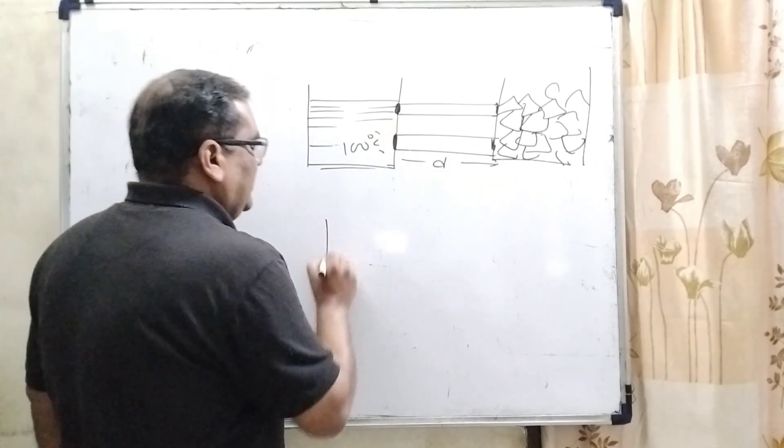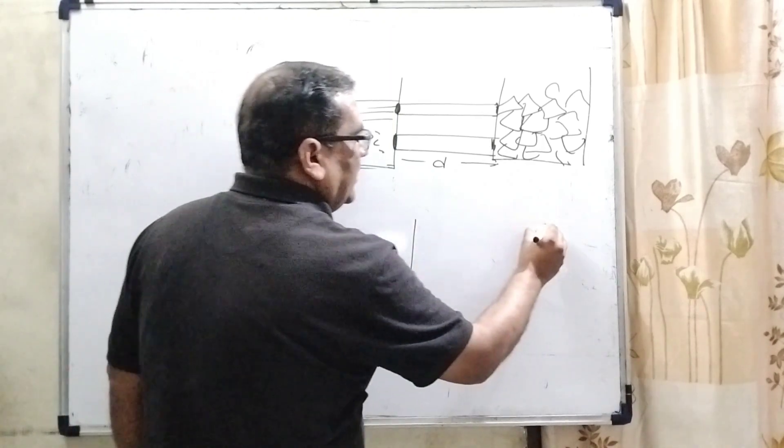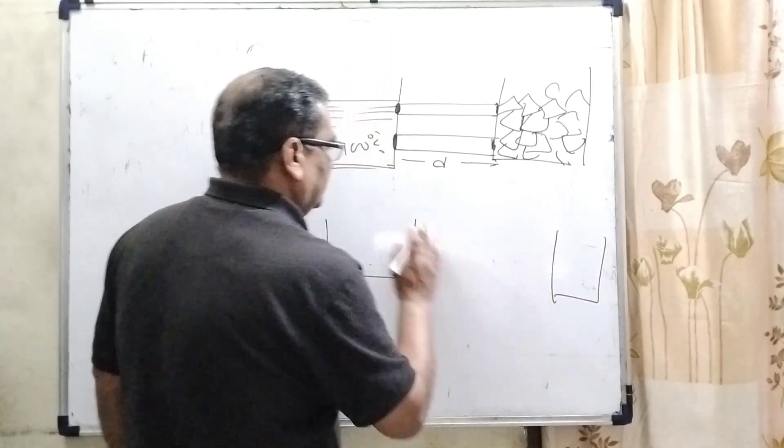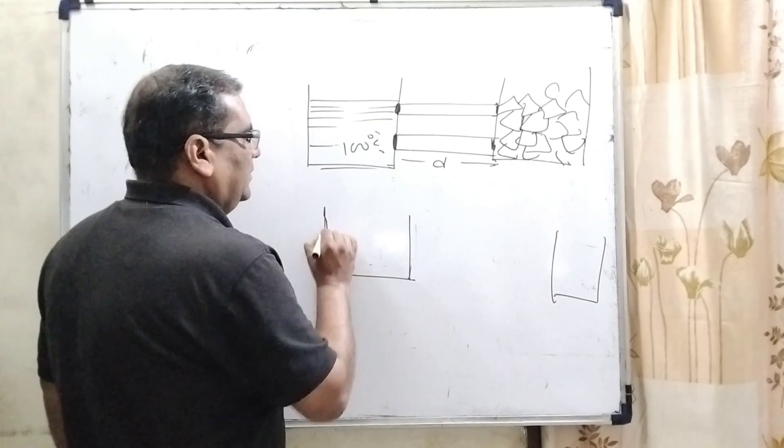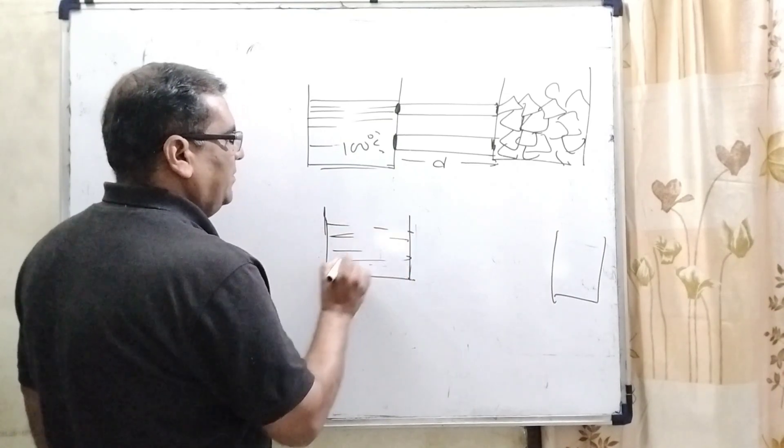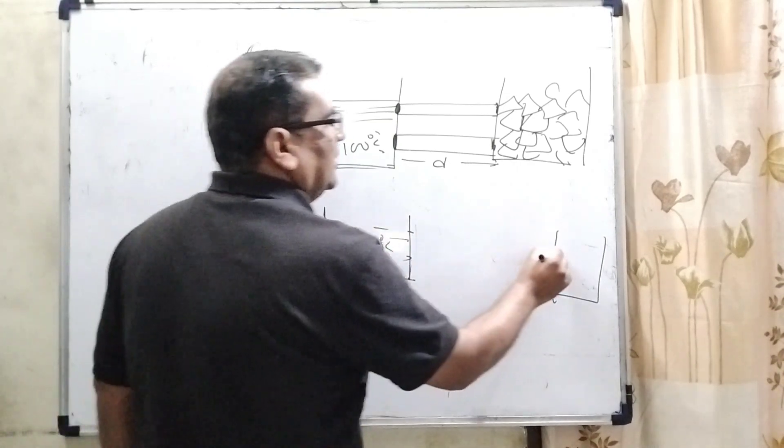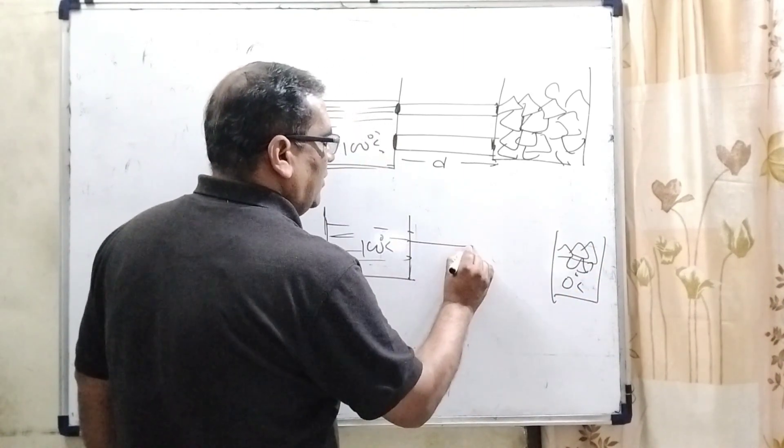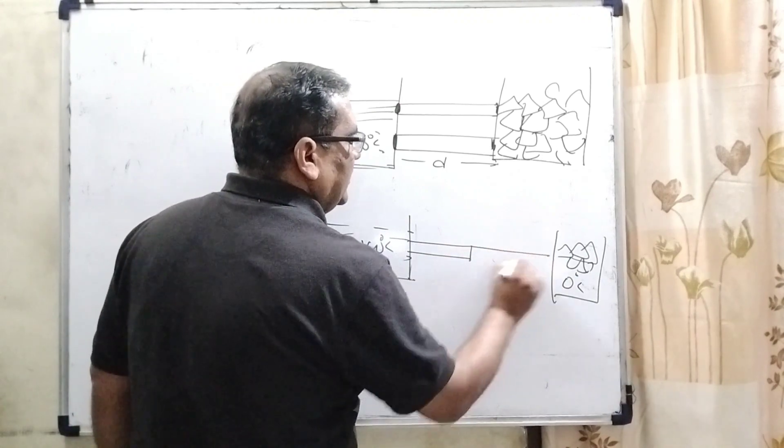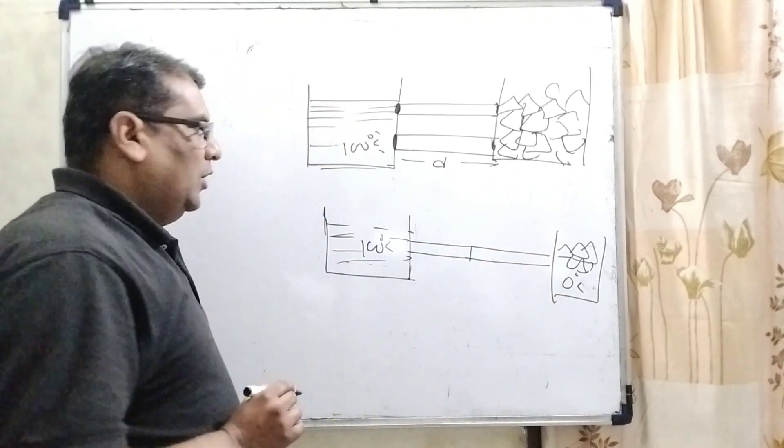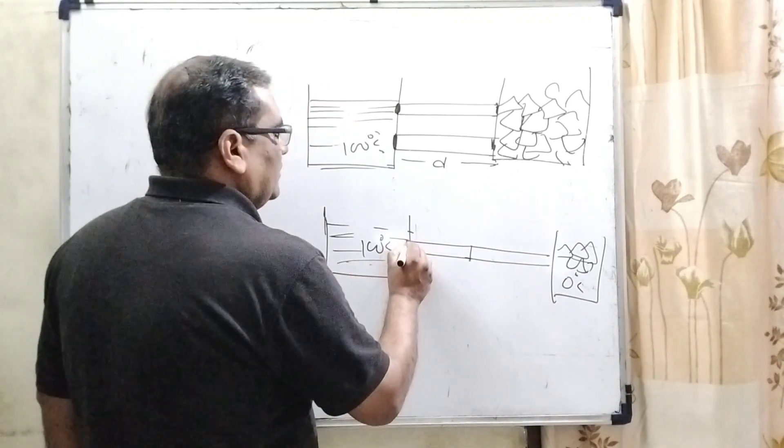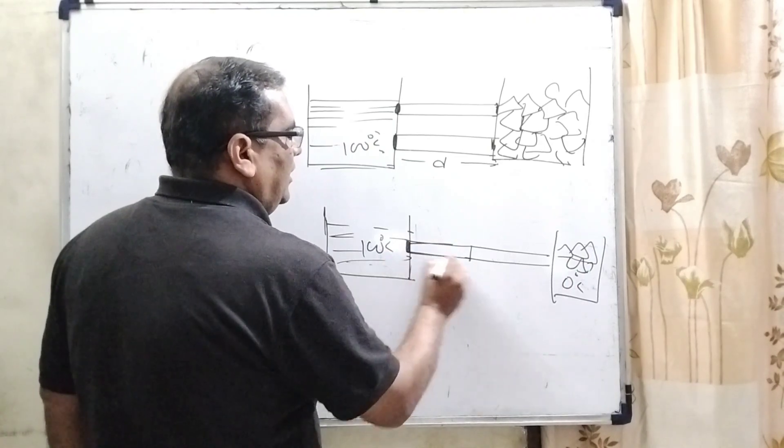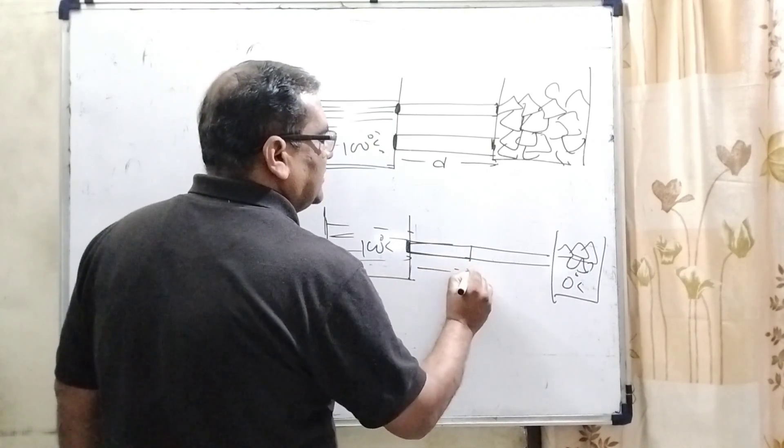And second case, in the second case, here again, same vessels, same temperature, 100 degree Celsius. This is ice at 0 degree Celsius and the rods are connected in series. So here, area is the same, but distance becomes double.